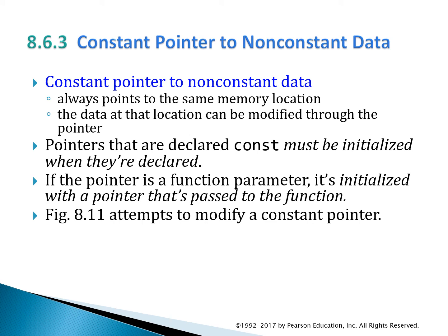The second case is a constant pointer to non-constant data — the pointer is constant but the data might be changing. It always points to the same memory location, and the data at that location can change. For example, a variable called x can be 5, 7, or 11, but x is being held in the same point in memory and the pointer always points to that location. When you declare a pointer const, it has to have some initial value — you can't declare it and initialize it later. It has to be initialized at the same time it's declared in the same line.